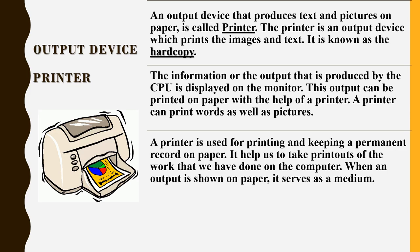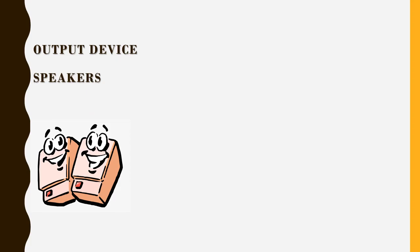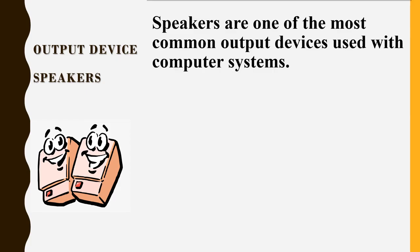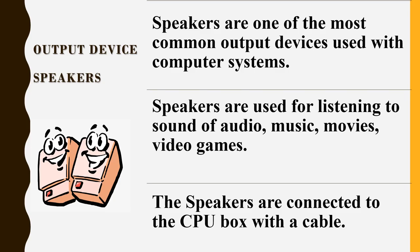Output Device — Printer: An output device that produces text and pictures on paper is called a printer. The printer prints images and text, and the output it produces is known as a hard copy. The output produced by the CPU is displayed on the monitor, and this output can also be printed on paper with the help of a printer. A printer can print words as well as pictures. It is used for printing and keeping a permanent record on paper, and helps us take printouts of work done on the computer. The printer is connected to the CPU box with a cable.